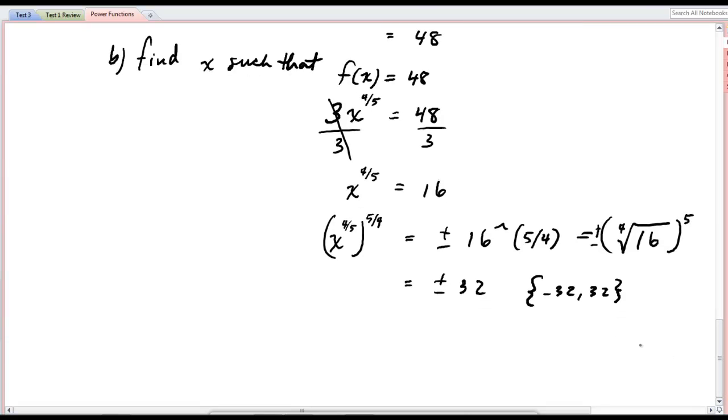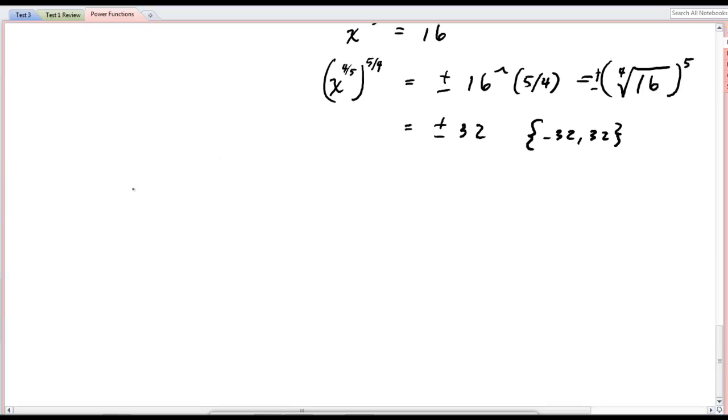Alright. Any others I want to do here? Yeah, I'll just make up one more. If I had f(x) equals 3x to the 2 thirds. No, I don't want 2 thirds. I want 3 halves. 3 halves minus 5. And I ask you to find something. Find f of 4.